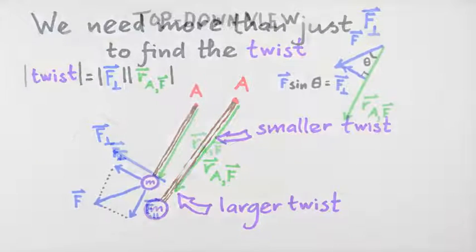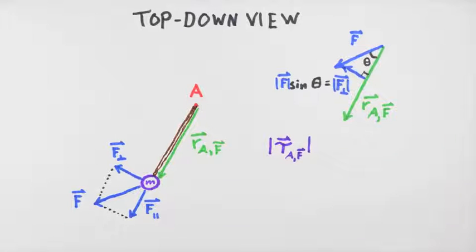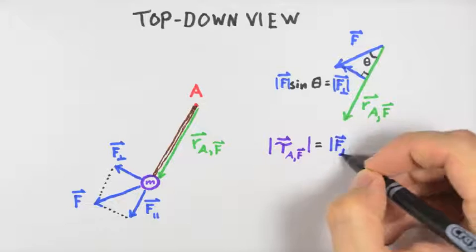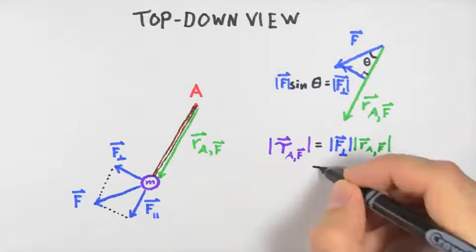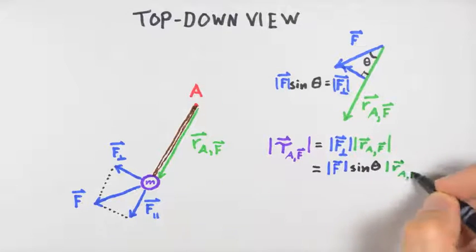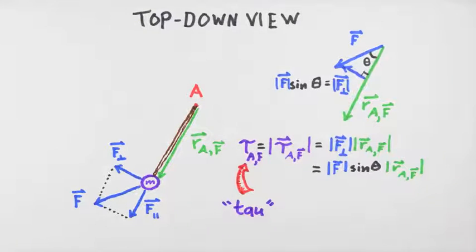Putting all this together, we now can describe the magnitude of the twist—which is to say, the magnitude of the torque due to F applied to our system. It's the product of the magnitude of the perpendicular component of F, F perp, and r sub a F. We symbolize the torque magnitude using the Greek letter tau. The dimensions of torque are the dimensions of force times a length, with corresponding SI units of a Newton meter.